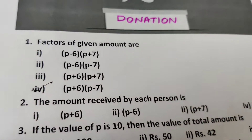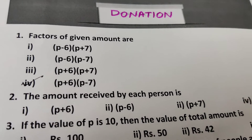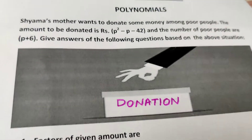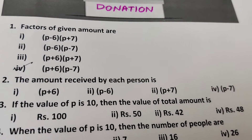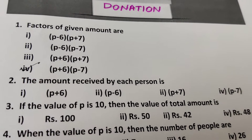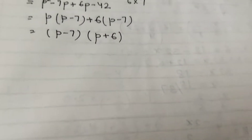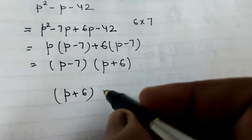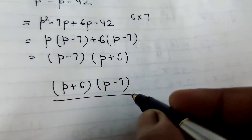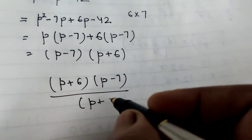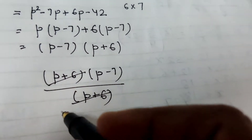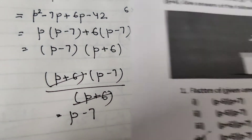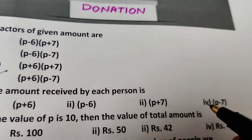Question 2: What is the amount received by each person? The total amount is (p plus 6)(p minus 7) and the number of people is p plus 6. Dividing the total amount by the number of people, p plus 6 cancels out, so the amount received by each person is p minus 7 rupees.